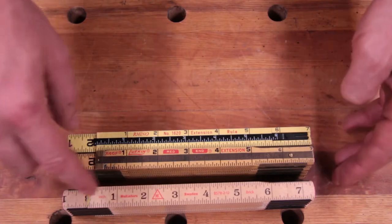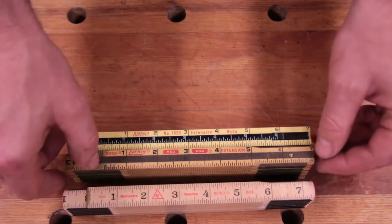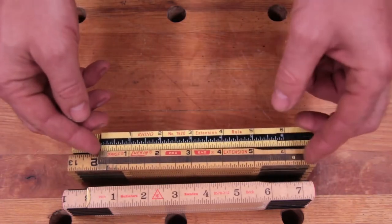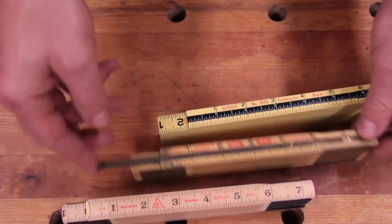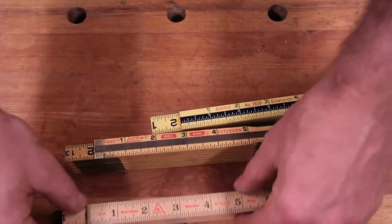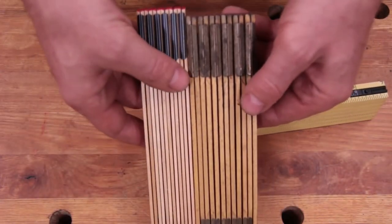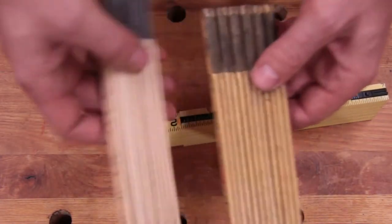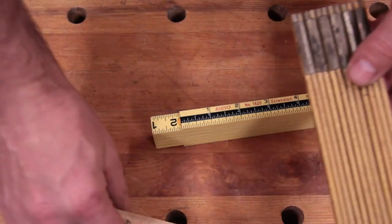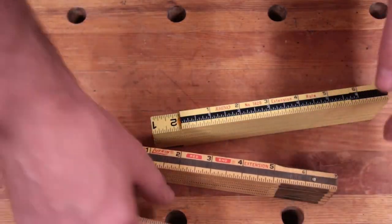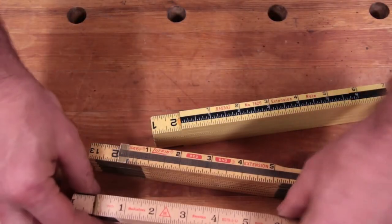Now this does not have the sliding brass end here. I really do like the sliding brass end. It's thinner than the Lufkin, with thinner rulers, so it packs up nicer. But this is actually longer - this is like two meters, so a little bit over six feet.